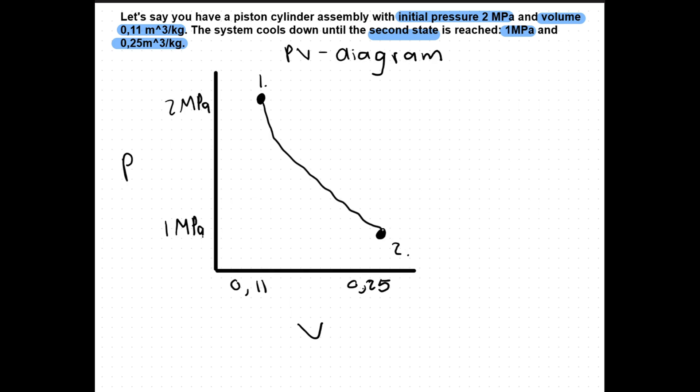Let's say you have a piston cylinder assembly with initial pressure of 2 MPa and volume of 0.11 meters cubed per kilogram. You allow it to cool down until the second state is reached: 1 MPa and 0.25 meters cubed per kilogram. The PV diagram of this theoretical process looks like this. To do calculations with this can be tricky. Thus we create theoretical paths.